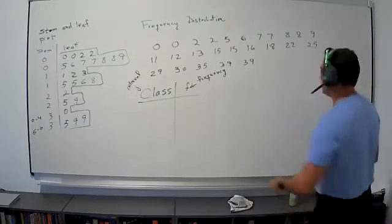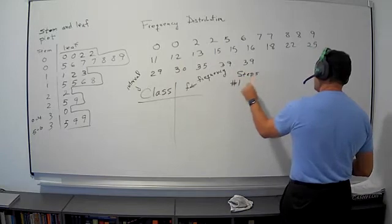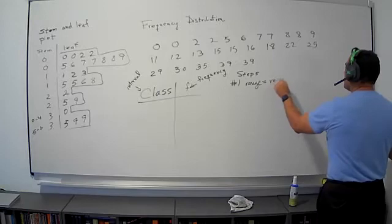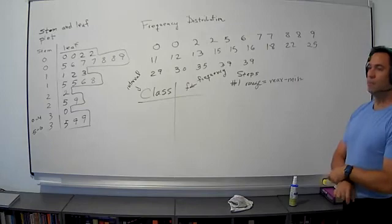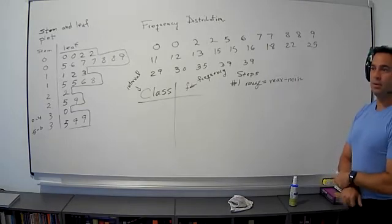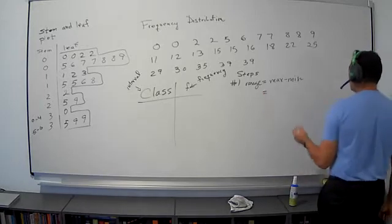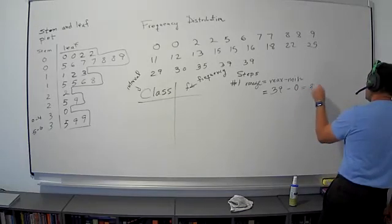Number one: find your range. Range equals max minus min. Can somebody tell me what the max minus min is here? What's my max? 39. What's my min? Zero. So this equals 39 minus zero, which is 39.